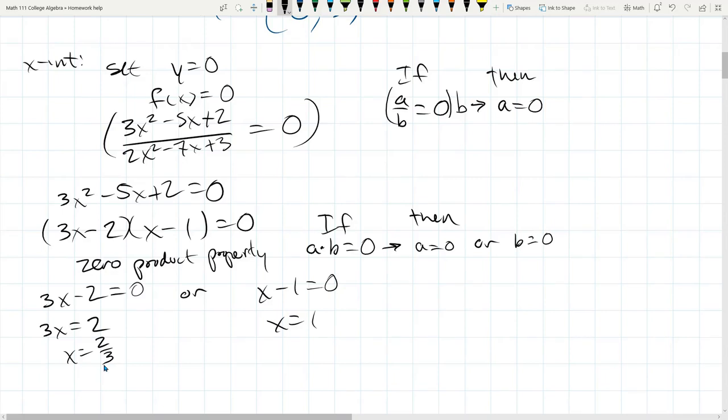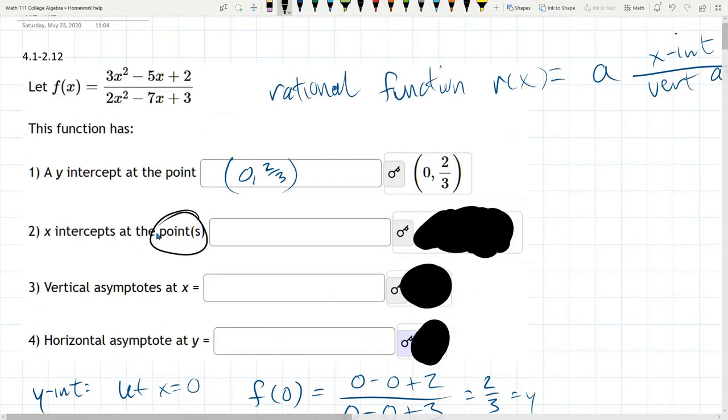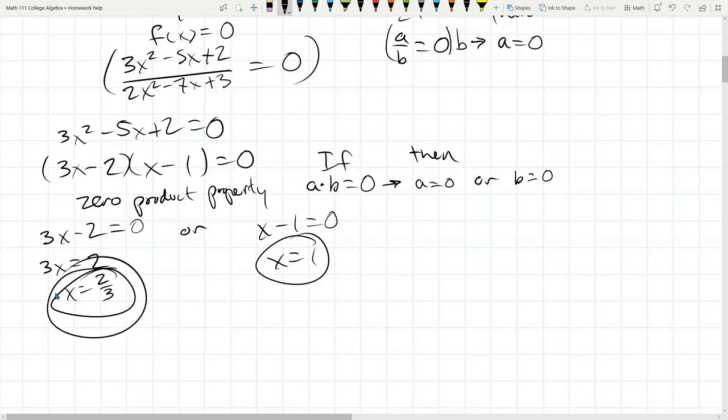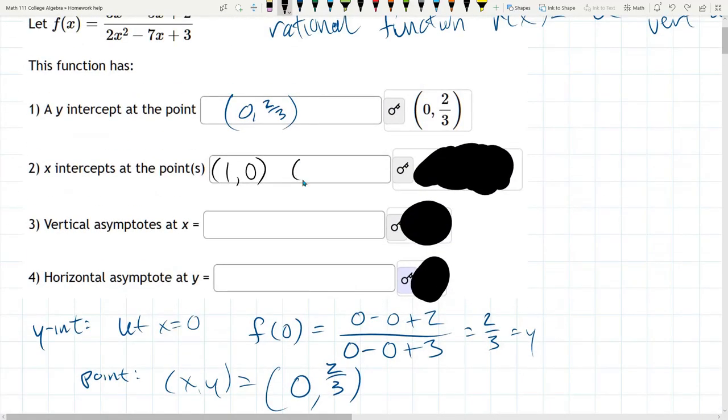So 2 thirds and 1. These are x-intercepts. We got 2 thirds and 1. Not 2 thirds and 0. 2 thirds and 1. These are two different x-intercepts, and they want them as points. So remember, our y-coordinate was zero. So one of them was 1 for x and 0 for y. That was this. The other one is 2 thirds for x, 0 for y. So there is our 2 x-intercepts.